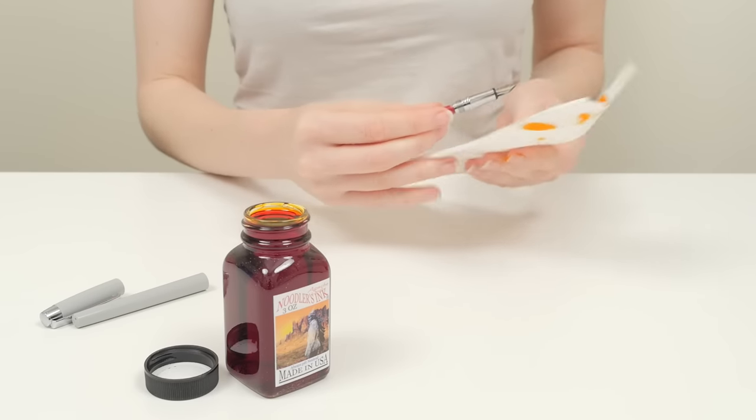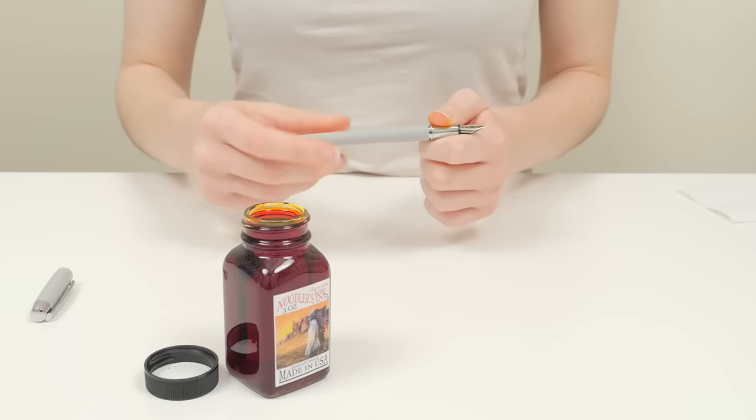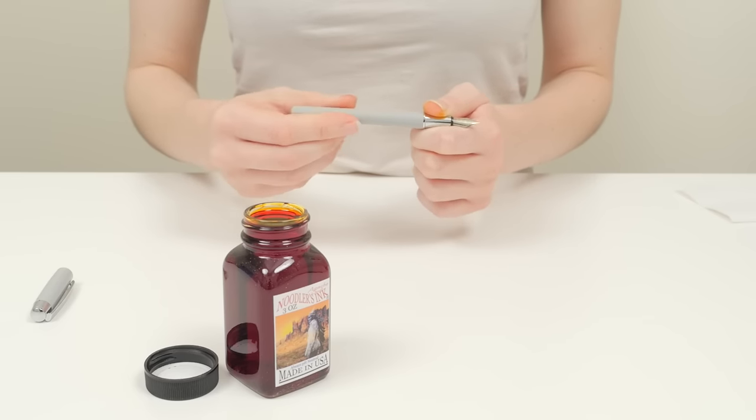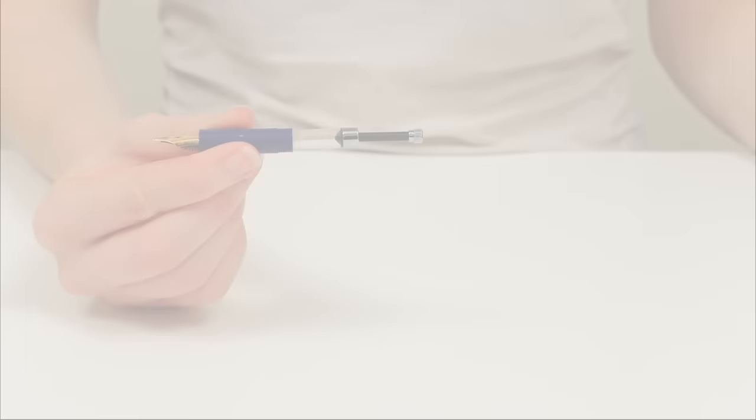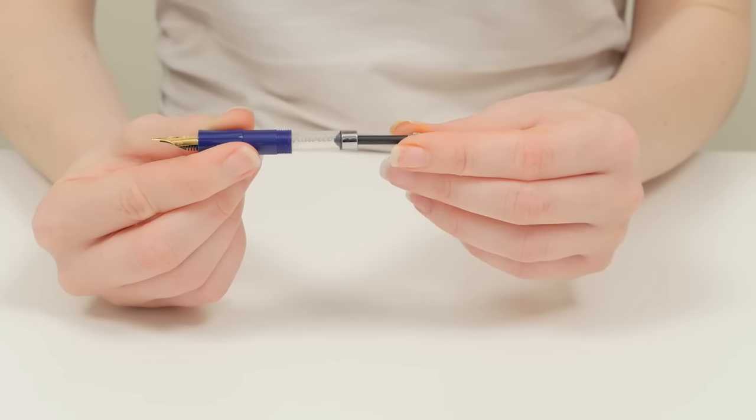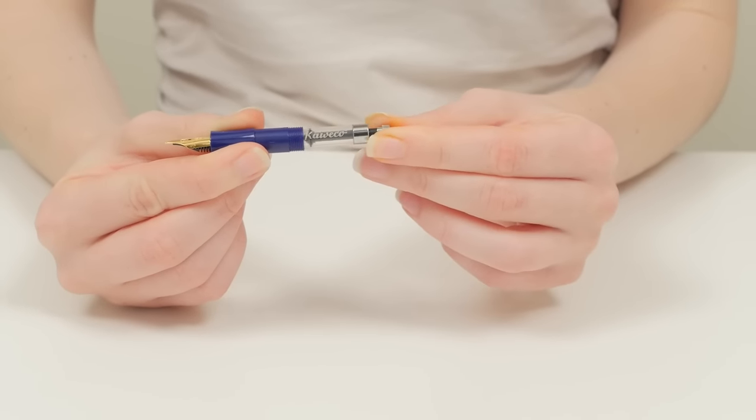Reassemble the pen and you're ready to write. Other types of converters include plunger converters, which work by moving the piston up and down with a plunger.